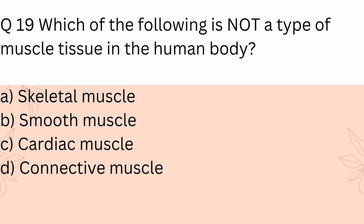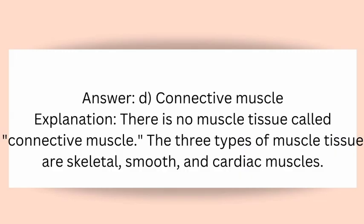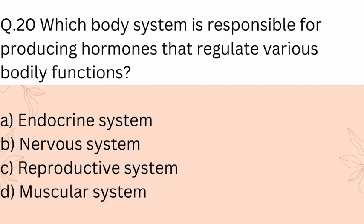Question 19: Which of the following is not a type of muscle tissue in the human body? A) Skeletal muscle, B) Smooth muscle, C) Cardiac muscle, D) Connective muscle. Answer: D) Connective muscle. Explanation: There is no muscle tissue called connective muscle. The three types of muscle tissue are skeletal, smooth, and cardiac muscles.